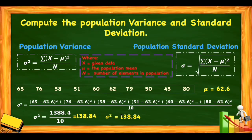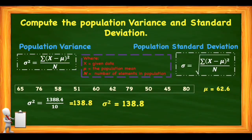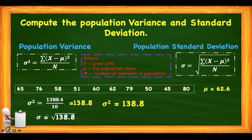Now that we have the population variance, it's easy to get the population standard deviation. We simply take the square root of the population variance. So sigma equals the square root of 138.84, which equals 11.78. Our population standard deviation is 11.78.